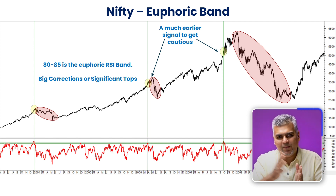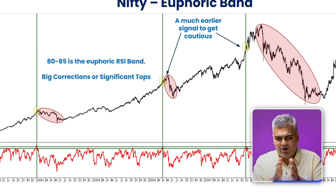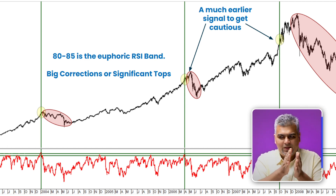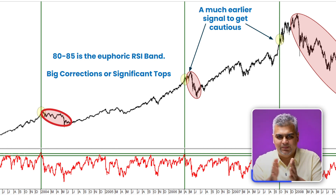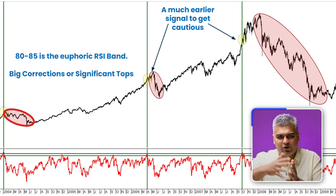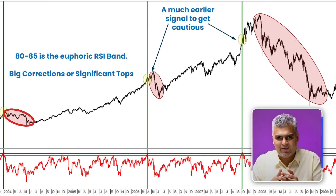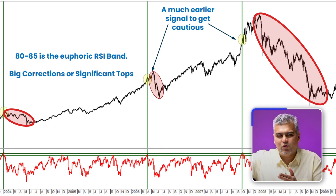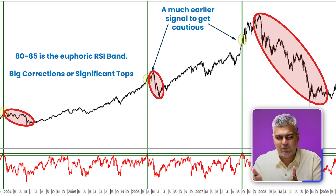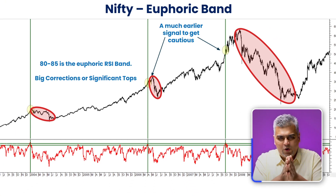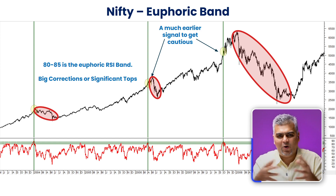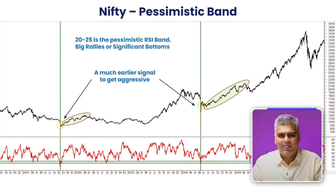Looking at what happened at RSI 80-85 over the last 10 years in Nifty, this has occurred roughly three to four times. In 2004 it gave a 15 to 30 percent correction; in 2007-08 there were a couple of higher tops before a big fall; in 2006 it also gave a 15 to 30 percent correction. So at RSI 80-85, it may not be an exact topping signal but it's a good early signal telling you this is an euphoric band where you want to be out of the markets or increasing cash.